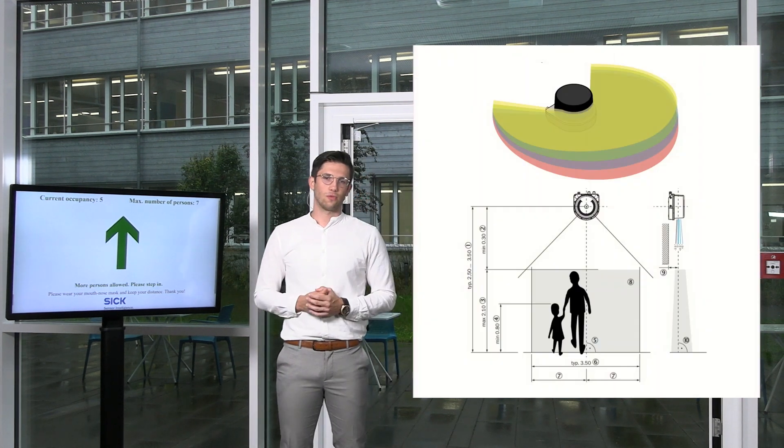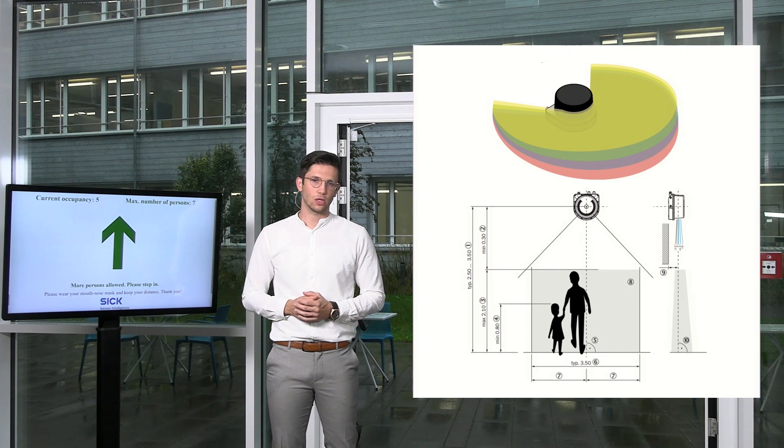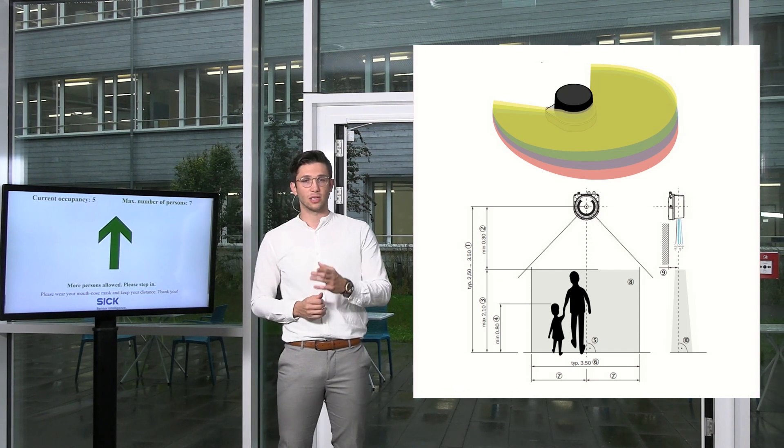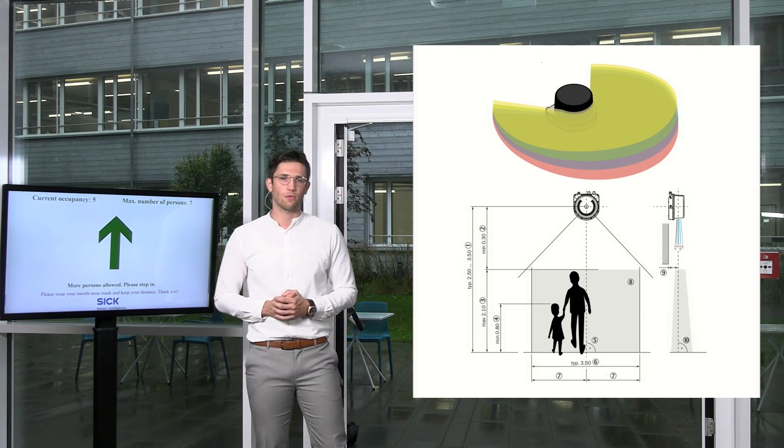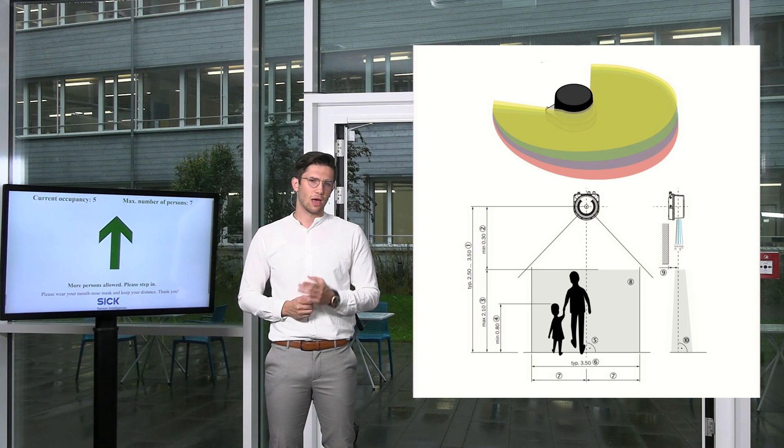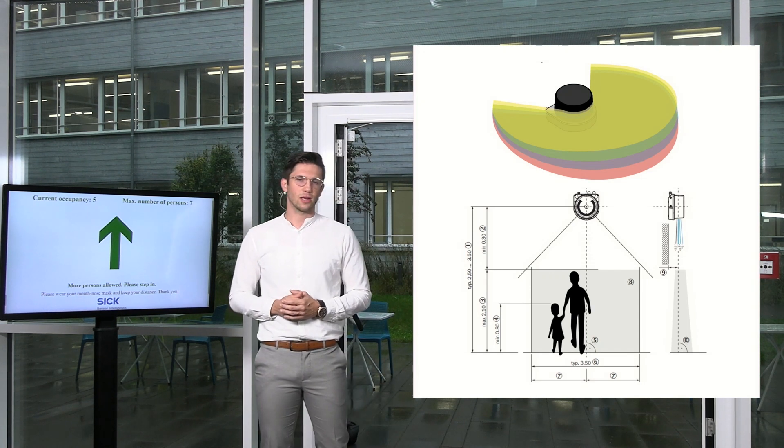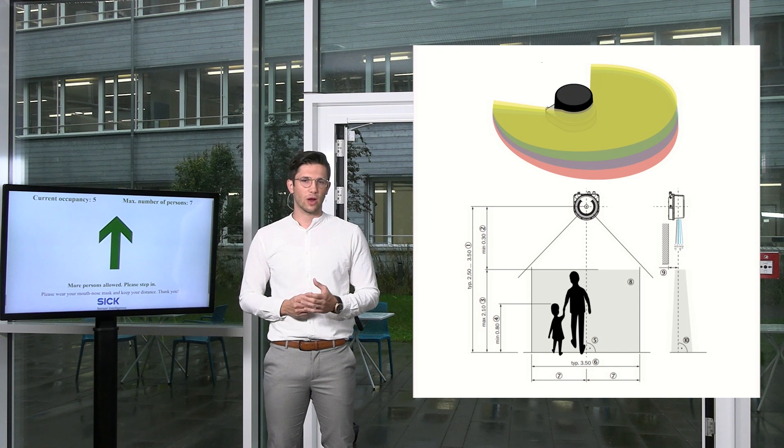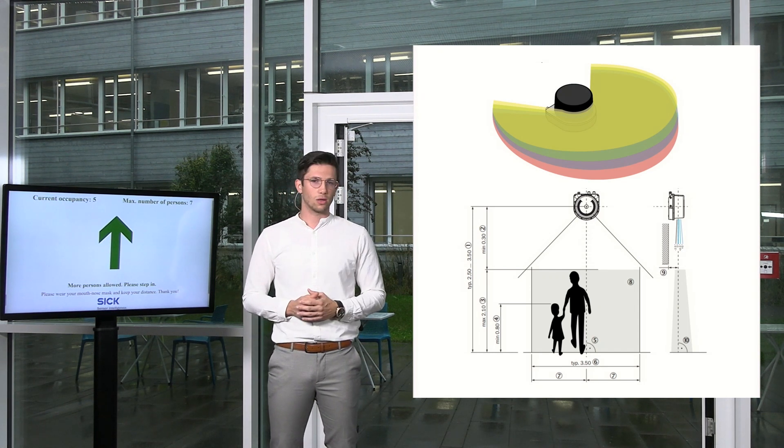The hardware of the software solution is also based on the LiDAR technology comparable to the DistanceGuard. But in this case we are using a 3D LiDAR, the MRS-1000 of our product portfolio with four layers. And thanks to the four layers we are able to identify the direction of movement correctly, even the persons walking out or walking in.